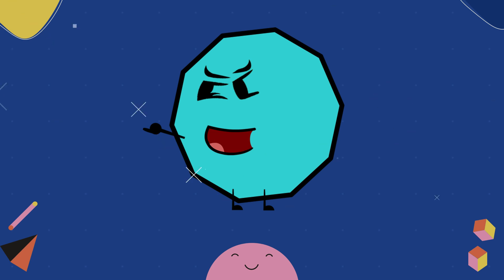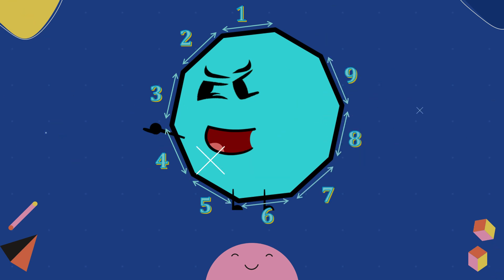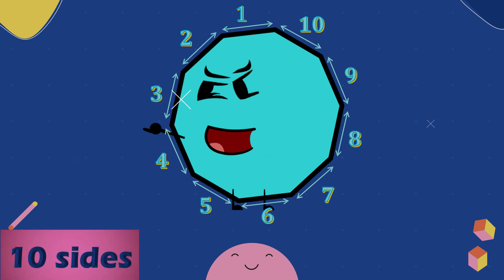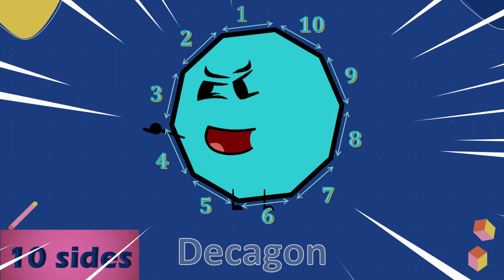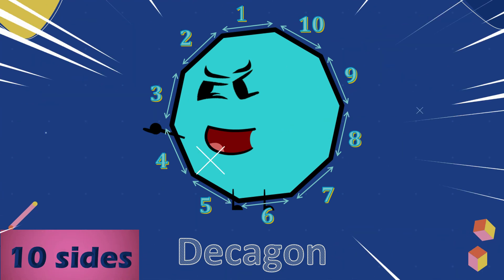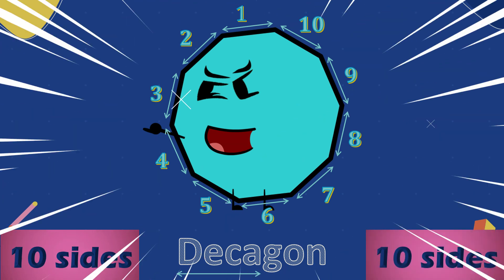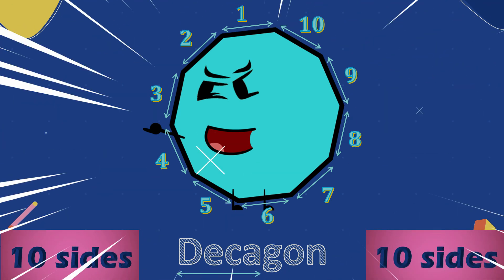Let's count the number of sides. One, two, three, four, five, six, seven, eight, nine, ten. Ten sides. Ten sides is Decagon. Deca means ten. Decagon.